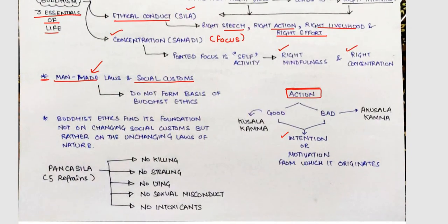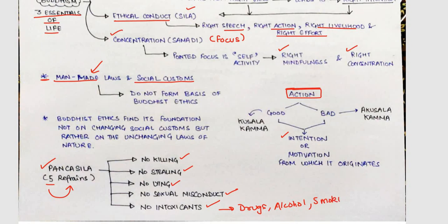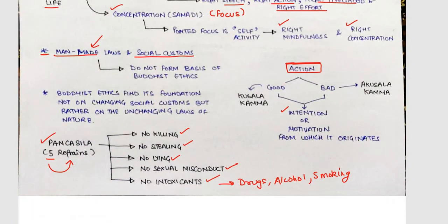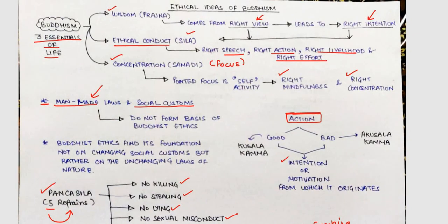Buddhism also talks about Panchashila — five things from which you should refrain yourself. First is killing, second is stealing, third is lying, fourth is sexual misconduct, and fifth is intoxicants like drugs, alcohol, or smoking. These are the five things from which you must refrain in order to become a good leader.